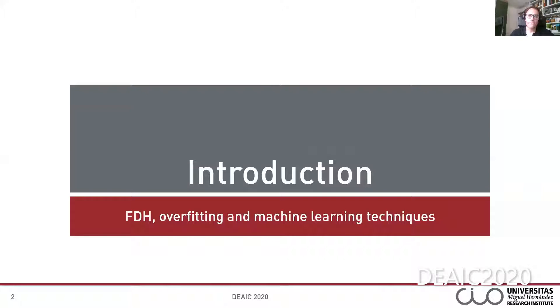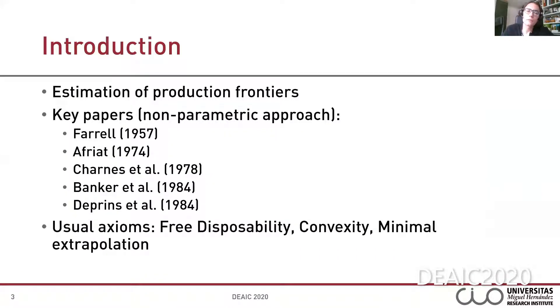Introduction: FDH, Overfitting and Machine Learning Techniques. Since the seminal papers by Koopmans, Debreu, Shephard and Farrell, a large amount of literature has been developed on how to estimate production frontiers and how to measure technical efficiency of production units. Farrell's approach can be categorized in the current area of nonparametric techniques since it is not necessary to identify a priori the specific mathematical formulation of the production frontier to be estimated.